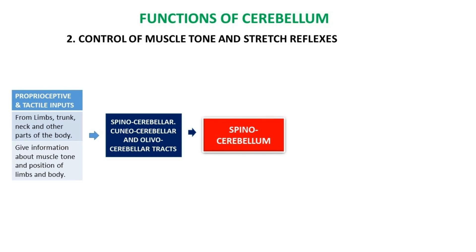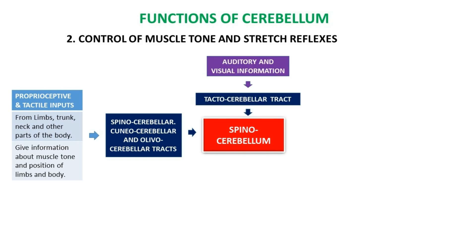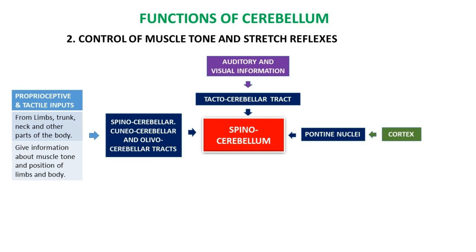Control of muscle tone and stretch reflexes is a function of the spinocerebellum. Afferents from the spinocerebellar, cuneocerebellar, and olivocerebellar tracts carry feedback from proprioceptive and tactile receptors. They give information about muscle tone and position of limbs and body. The spinocerebellum also receives auditory and visual information via the tectocerebellar tract, and cortical inputs via pontine nuclei.